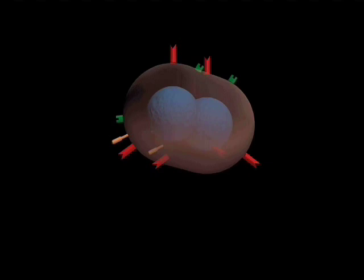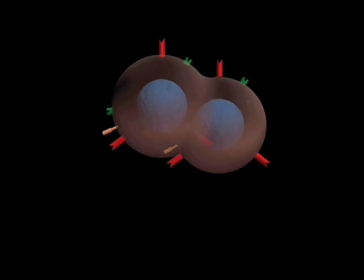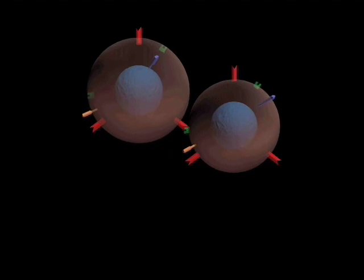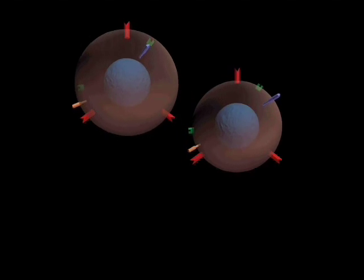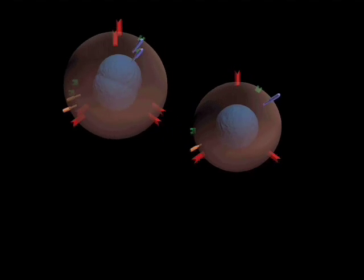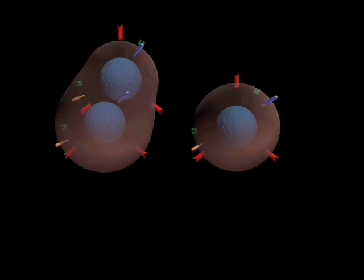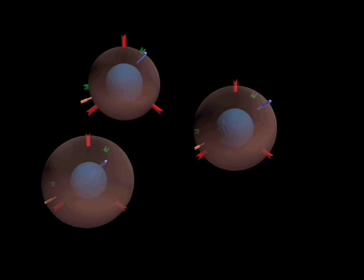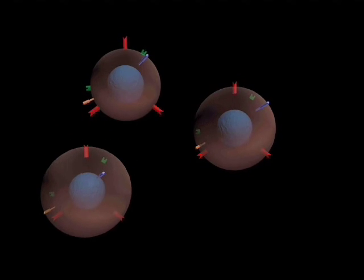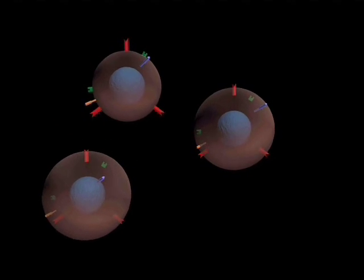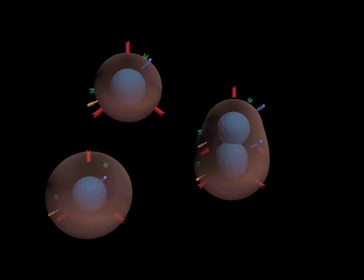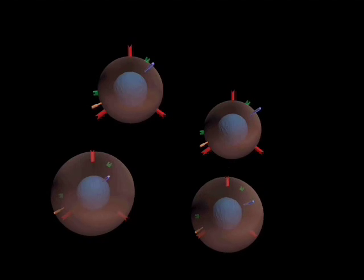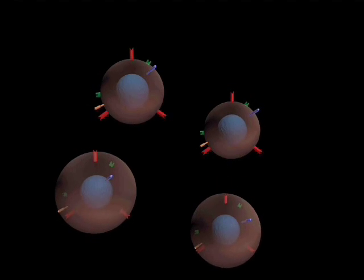The interleukin-2 binds to the receptors on the surface of the T-cell, triggering division. This causes the induction of new co-stimulatory molecules on the surface of the T-cell. The T-cell divides, and after five or six cycles, there is a gradual loss of the interleukin-2 receptor. This prevents the cells from receiving any positive signals to continue dividing.